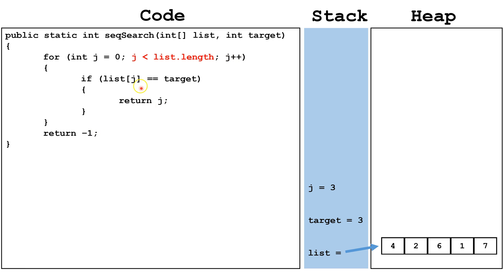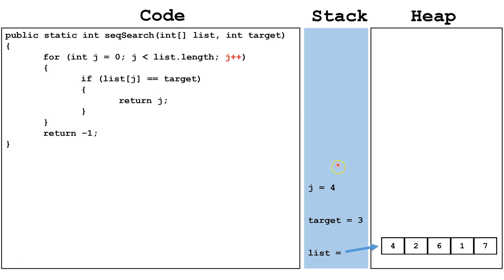We're going to check: is j less than the list length? It is, because the list length is 5 and j is 3. So we're going to continue through the for loop again. Here, we're going to pull out index 3. Index 3 is 1, so we're checking if it equals 3. It does not, so we're going to skip this block of code. We go down to the end of the for loop and increment j by 1 to be 4.